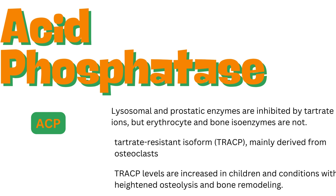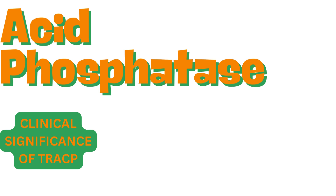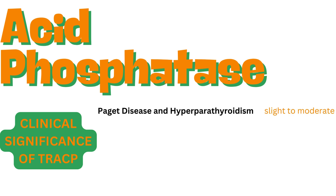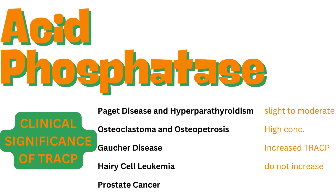TRACP levels are increased in children and conditions with heightened osteolysis and bone remodeling. TRACP is a valuable marker in conditions involving osteolytic activity — the breakdown of bone tissue. Key conditions: Paget disease and hyperparathyroidism show slight to moderate increases in TRACP levels. Osteoclastoma and osteopetrosis: high concentrations of TRACP correlate with the number of osteoclasts. Gaucher disease: increased TRACP levels are due to the presence of abnormal macrophages. Hairy cell leukemia: while osteoclast-type ACP is expressed, TRACP levels do not increase in plasma. Prostate cancer: TRACP was historically used but has been largely replaced by prostate-specific antigen (PSA). Unlike other bone resorption markers, TRACP levels are not affected by renal dysfunction.